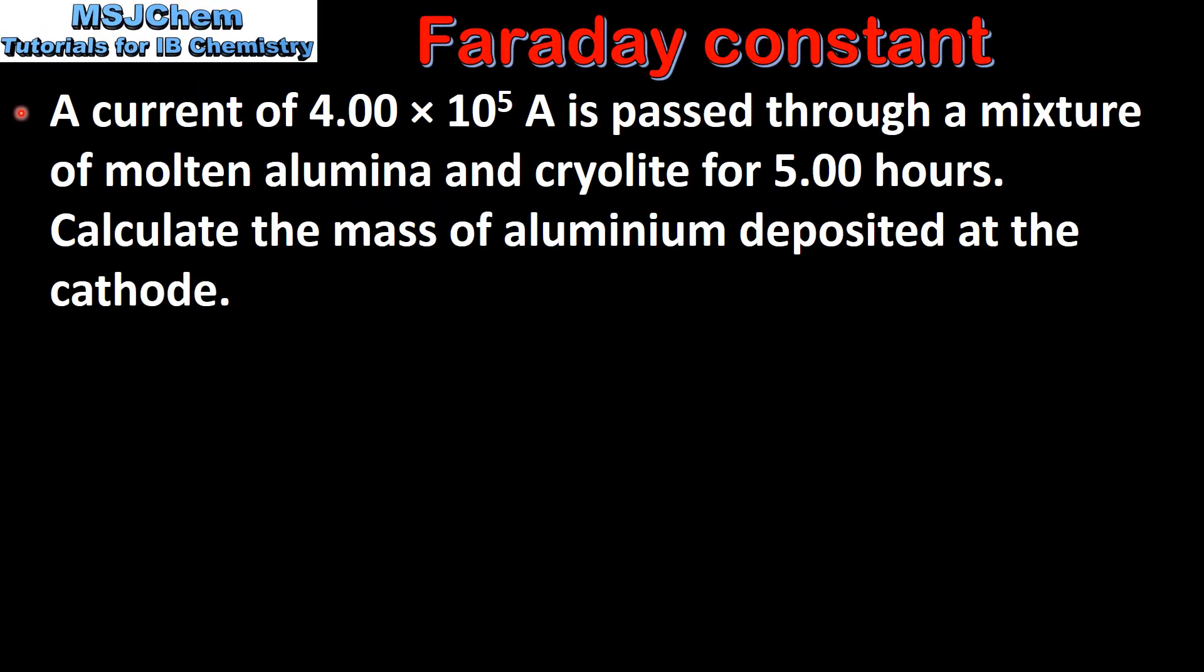Next we look at an example using the Faraday constant. A current of 4.00 times 10 to the 5 amps is passed through a mixture of molten alumina and cryolite for 5 hours. Calculate the mass of aluminium deposited at the cathode.